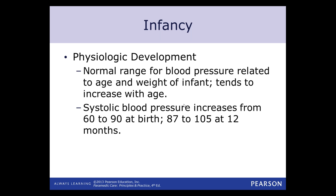Knowing normal blood pressure related to age is very important. For young kids, you can use either 70 or 72 — those are the two numbers I've seen in different texts and articles — plus the patient's age, and that gives you the low range of acceptable systolic blood pressure. So for a two-year-old, a systolic blood pressure of 72 to 74 is acceptable. Below that is going to be an abnormal reading.